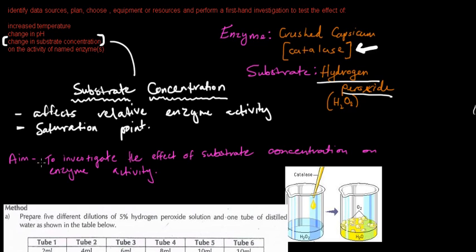Our aim is to investigate the effect of substrate concentration on enzyme activity. The enzyme we're using today is catalase, which is also commonly found in crushed capsicum, potato, and a lot of other things. Our substrate that we're using is hydrogen peroxide.